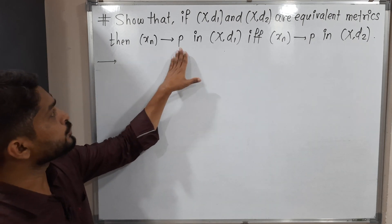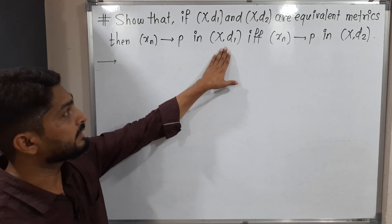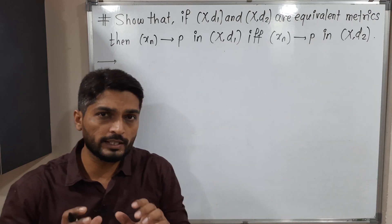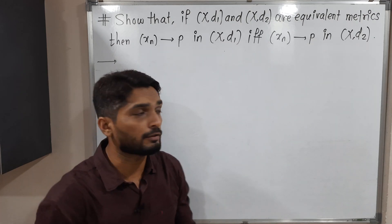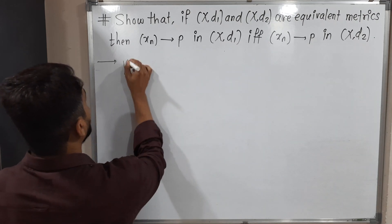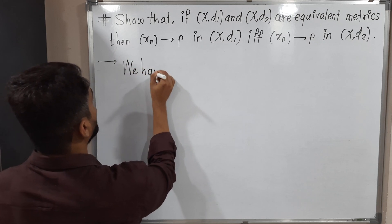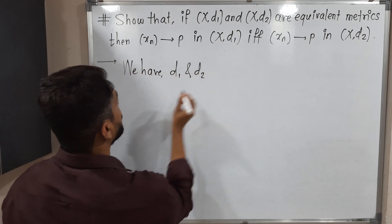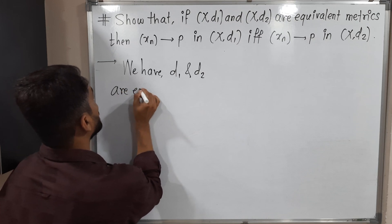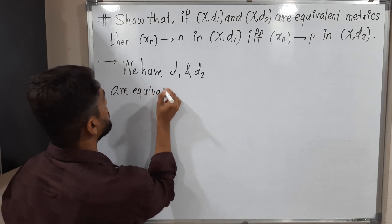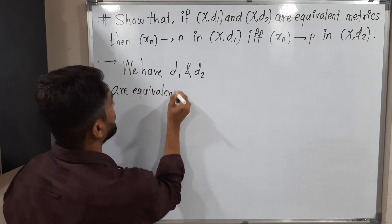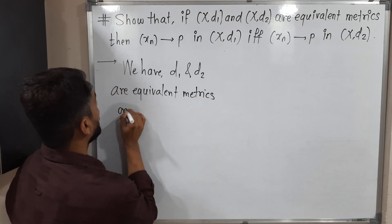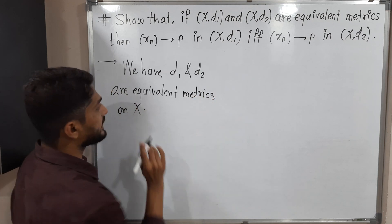If sequence xn converges to P in (X, D1), if and only if xn converges to P in (X, D2). So let us start with the given information. We have D1 and D2 are equivalent metrics on X. This is the given information.